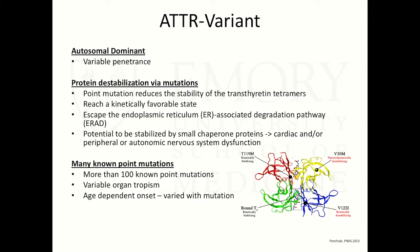The variant form of ATTR is an autosomal dominant condition with variable penetrance. Nearly 100 mutations are known. The homo-tetramer exists in balance with a monomeric form; point mutations cause it to develop a kinetically favorable state, aggregate in positive tissues, and cause disease. There is variable organ tropism evident in the phenotype: some mutations confer a more cardiac phenotype, others are more variable, and some are strictly polyneuropathy — referred to as FAP. The two mutations most relevant to us are the V122I (Val122Ile) and the V30M (Val30Met).